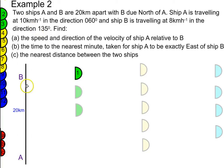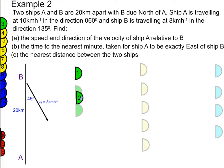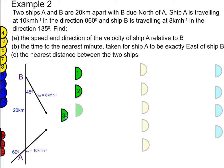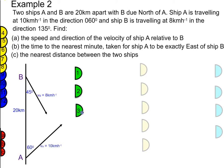We've got two ships, A and B, 20 kilometres apart. We can draw on the velocity of B and the velocity of A. This here is a bearing of 135 degrees, which means it will make 45 degrees with the north line. And this here has got a bearing of 60 degrees.